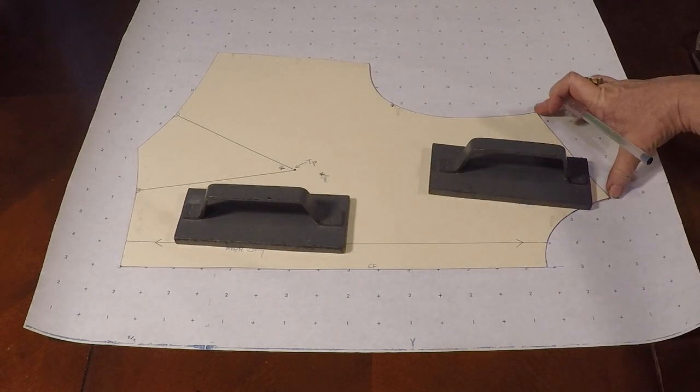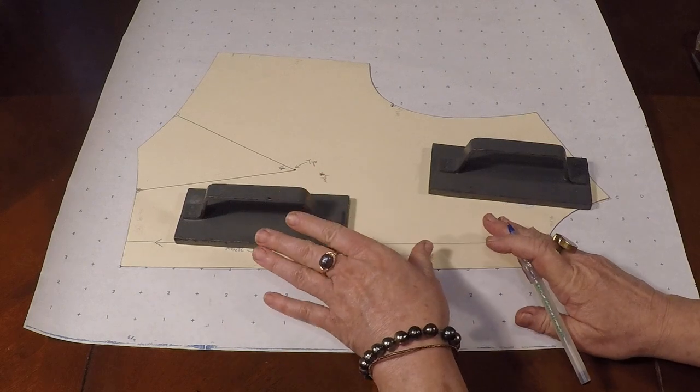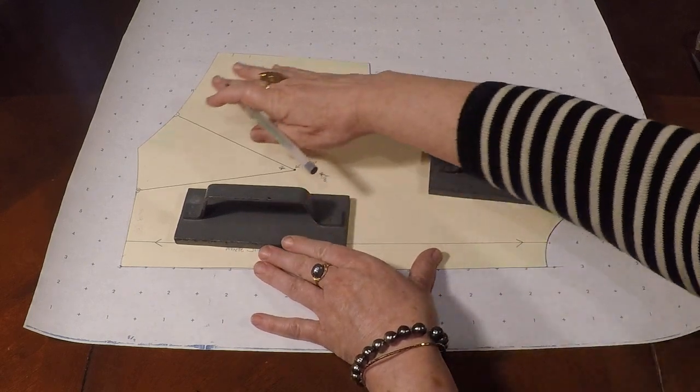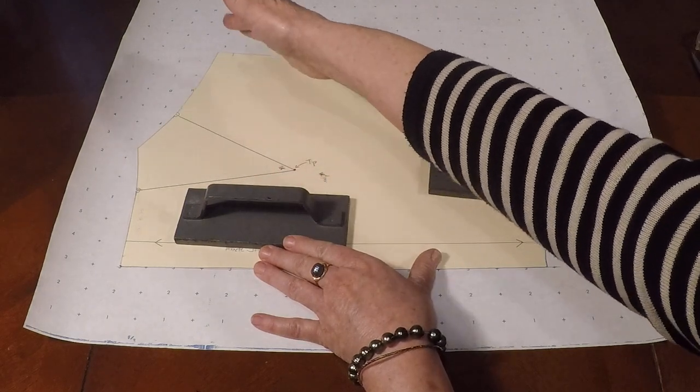And what we've done so far is we've done the grainline and I've copied off the front waist, the neckline, the shoulder, the armhole, and I'm starting to do the side seam. So we're copying everything that is not going to move. The area that's going to move is over here where the dart is and where we have the new position.